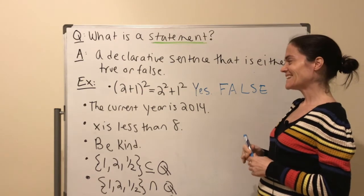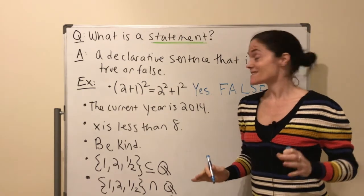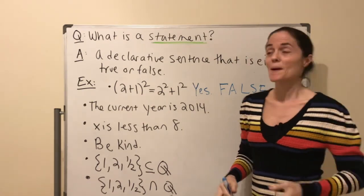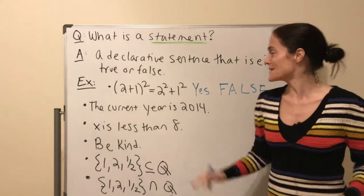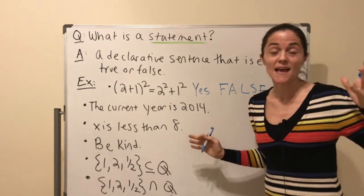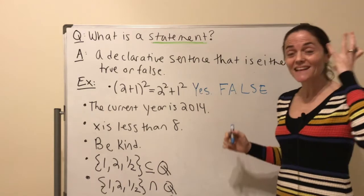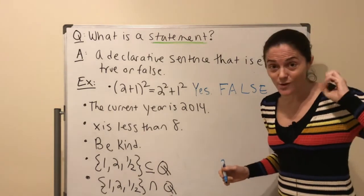Next: 'The current year is 2014.' This one's not about math per se, but it is a statement — you're declaring something — and it happens to be false.